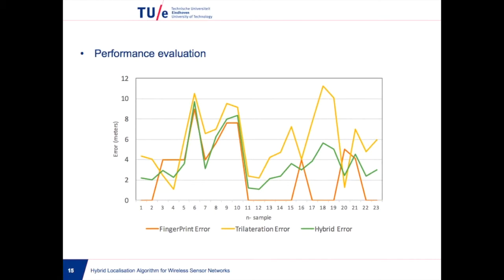It stands out that the trilateration curve is above the other curves in most cases with the highest error of all, followed by the hybrid algorithm error.